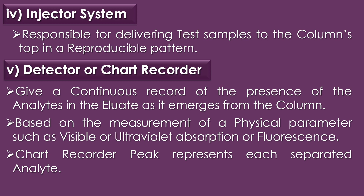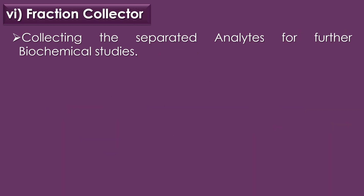The fourth component is the injector system, which is responsible for delivering test samples to the column in a reproducible pattern. The fifth component is the detector or chart recorder, used to give a continuous record of the presence of analytes in the eluate as it emerges from the column. Detection is usually based on the measurement of a physical parameter such as visible or ultraviolet absorption or fluorescence, and a peak on the chart recorder represents each separated analyte. The sixth component is the fraction collector, used for collecting the separated analytes for further biochemical studies.